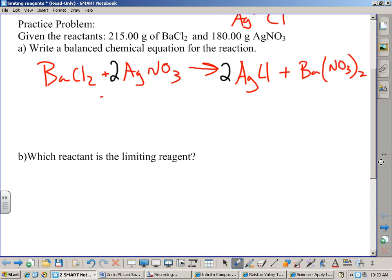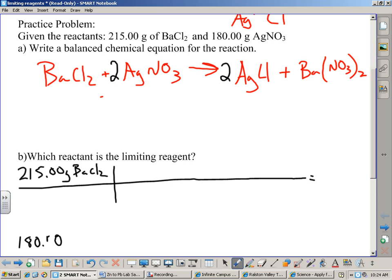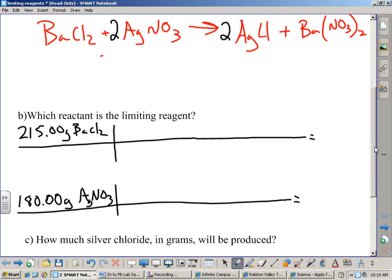Now, the next question we have listed here is, which reactant is the limiting reagent? We talked a little bit about this last week. Anytime I give you two amounts in your problem, how many problems are you going to have? Two. We're going to have two separate problems here. The first one is going to be 215 grams of barium chloride. And the other problem is going to be 180.00 grams of the silver nitrate.